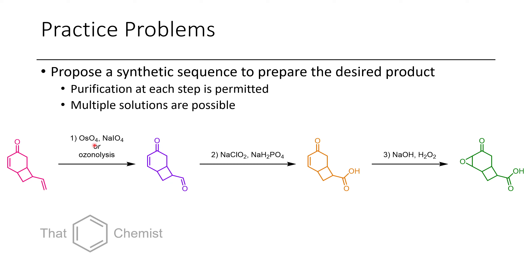If you didn't want to do that, you could do ozonolysis, which would almost certainly react at that position first. Once we have this aldehyde isolated — which for ozonolysis would be formed upon workup — in our case the osmium tetroxide would form a 1,2-diol, and sodium periodate cleaves it to the aldehyde.